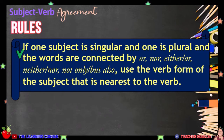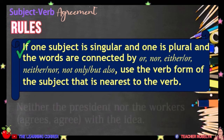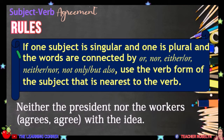If one subject is singular and one is plural and the words are connected by OR, NOR, EITHER...OR, NEITHER...NOR, or NOT ONLY...BUT ALSO, use the verb form of the subject that is nearest to the verb. For example, the subject nearest to the verb is WORKERS, which is plural. Therefore, we will use the verb AGREE. Neither the president nor the workers agree with the idea.